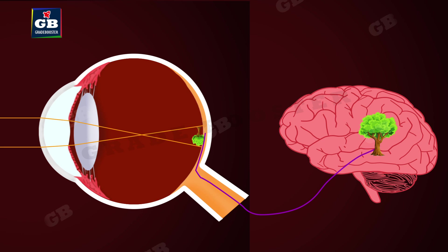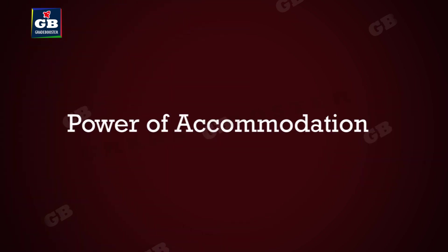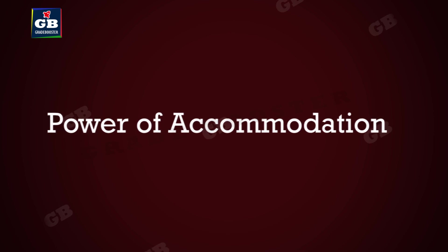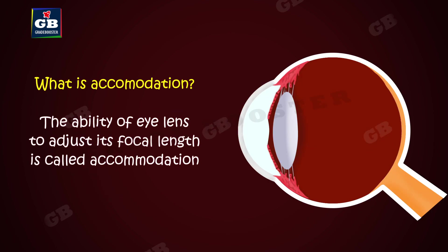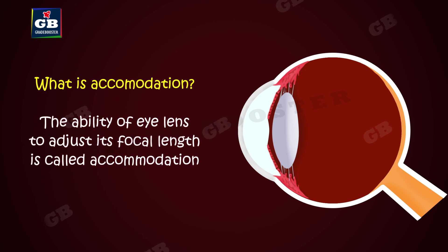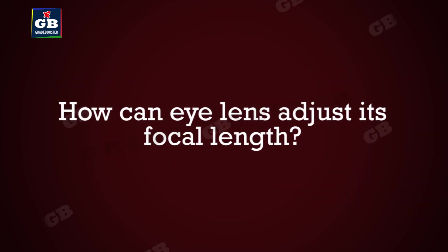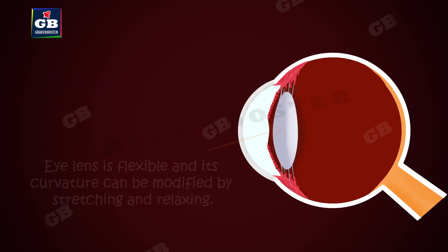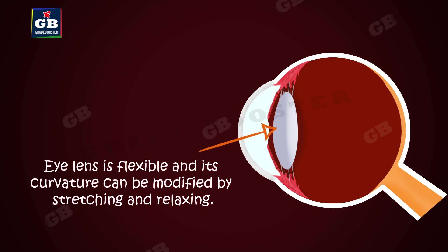Now let us see power of accommodation. What is accommodation? The ability of the eye lens to adjust its focal length is called accommodation.